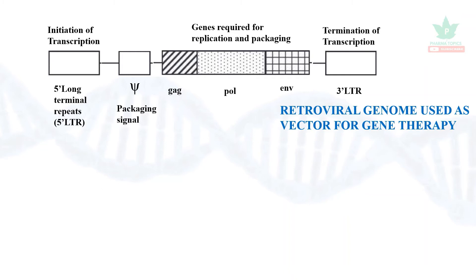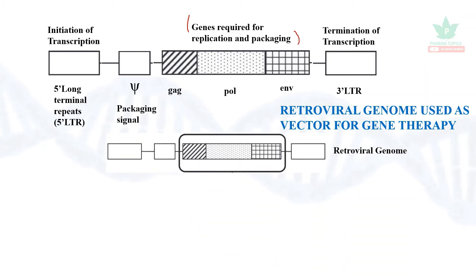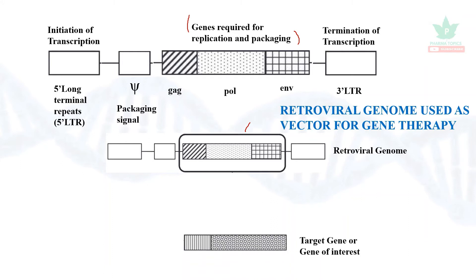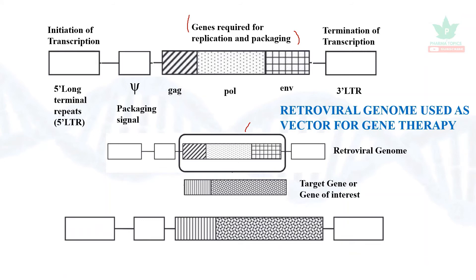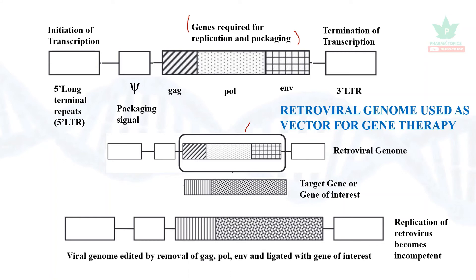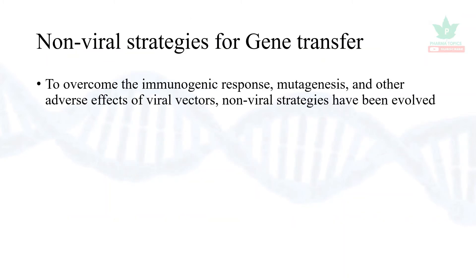The retroviral genome has different regions: the initiation region with 5' long terminal repeats, packaging signal regions, 3' terminal regions of transcription, and the genes required for replication and packaging — that is, gag, pol, and env. The gag, pol, and env region is deleted and used for ligation of the target genes. The new gene of interest is ligated in this area, so replication does not happen because the replication genes are deleted, making the virus incompetent.